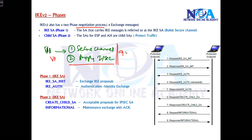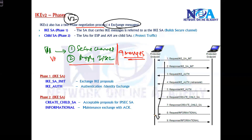In IKEv1, the process uses somewhere around six or nine messages. In IKEv2, the complete process is combined into four messages. You can see in the diagram there are eight to nine messages shown, but these are actually combined together into four messages.